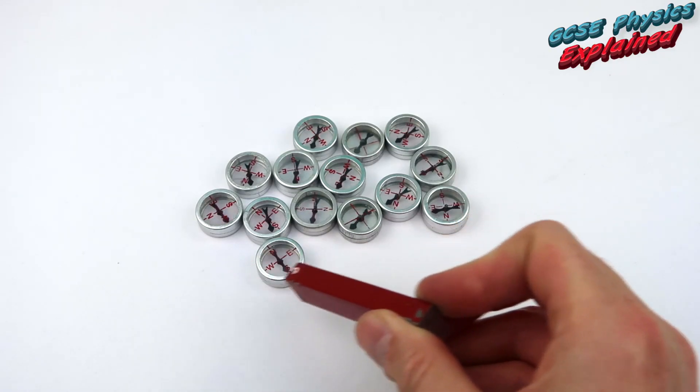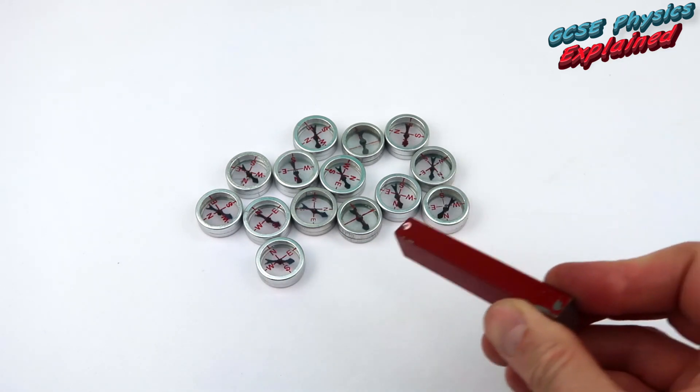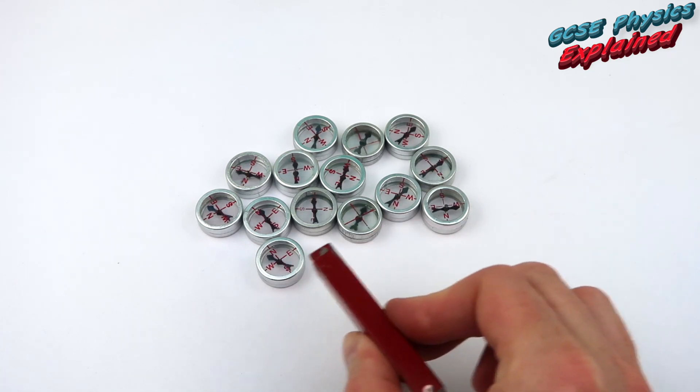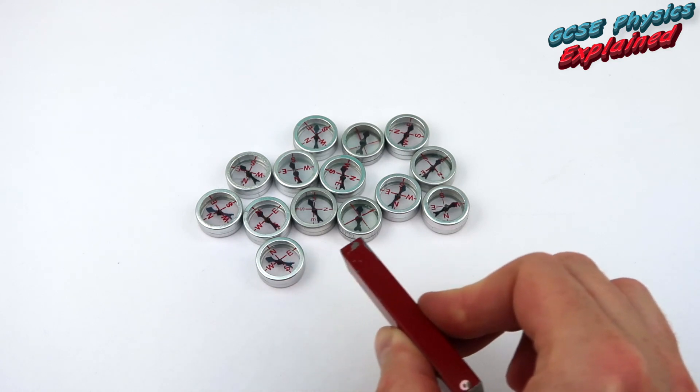They are the North Seeking poles. Now if I flip the magnet round, you can see that the compasses all spin round. That's the South Seeking poles. Good isn't it?